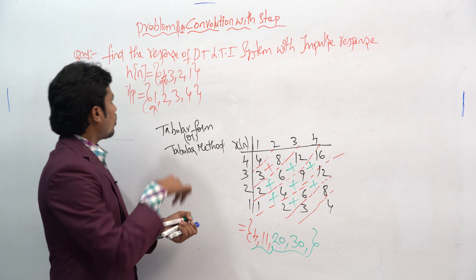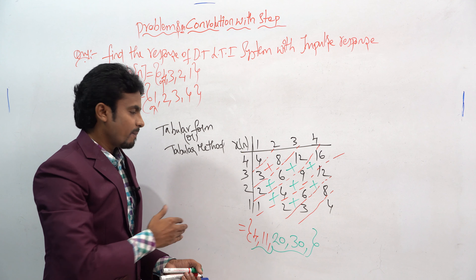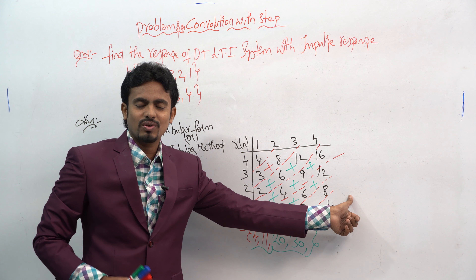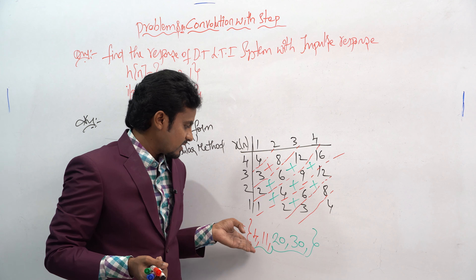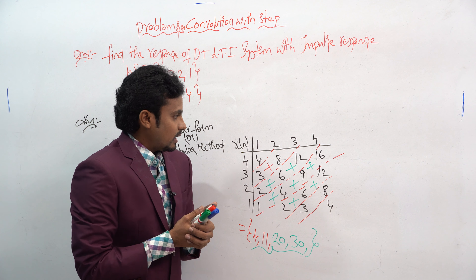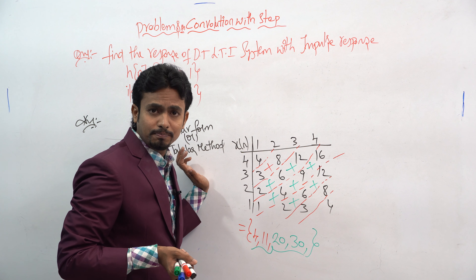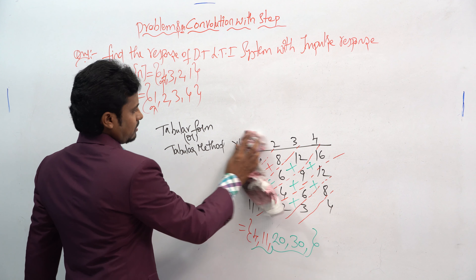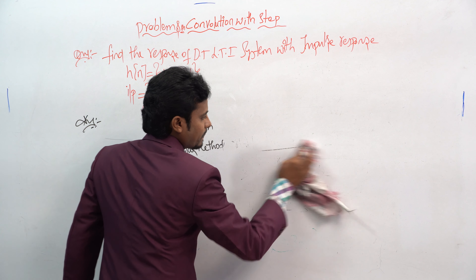In the previous approach, there were a lot of manual steps to do, but by using the tabular method this is easy and very quick. We easily get {4, 11, 20, 30} and further values without complex steps. Now let's see some more GATE questions based on this tabular method. The GATE question is somewhat tricky, but if you get the concept it will be easy.